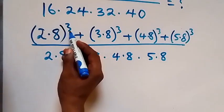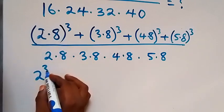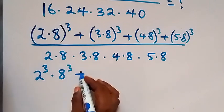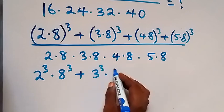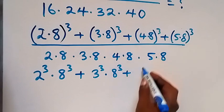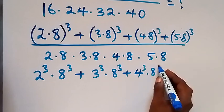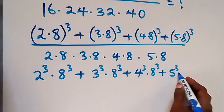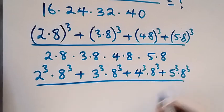From the law of indices, this power will affect these two numbers. So in the numerator we have 2 raised to power 3 times 8 raised to power 3, plus 3 raised to power 3 times 8 raised to power 3, plus 4 raised to power 3 times 8 raised to power 3, plus 5 raised to power 3 times 8 raised to power 3.